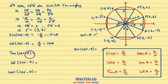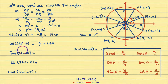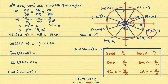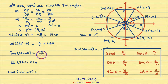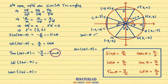Now tan(360° − θ). Tan theta is defined as the y coordinate of the point divided by the x coordinate of the point. Tan(360° − θ) is defined as the y coordinate of point B divided by the x coordinate of point B. That is minus y divided by x, which equals minus y by x. Since y by x is tan theta, therefore tan(360° − θ) = −tan θ.